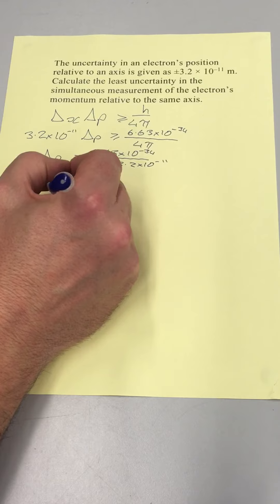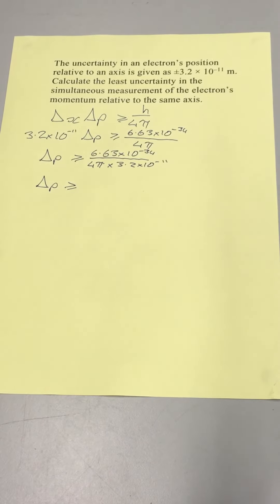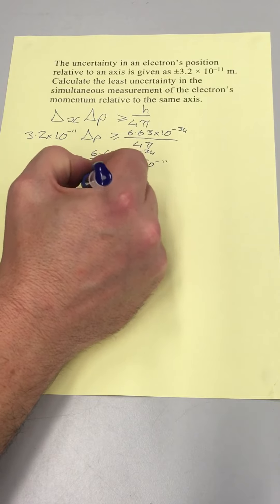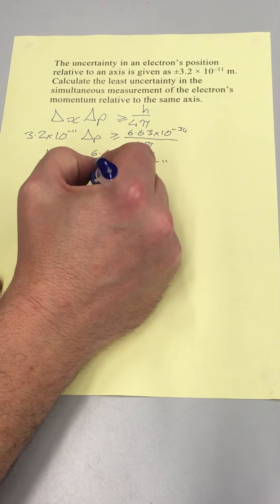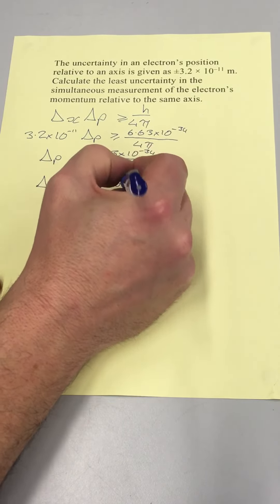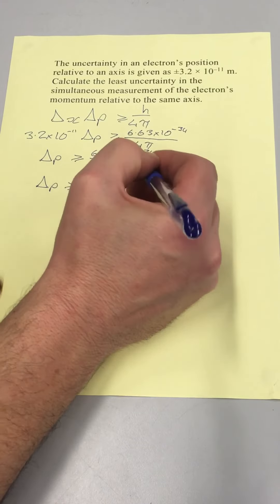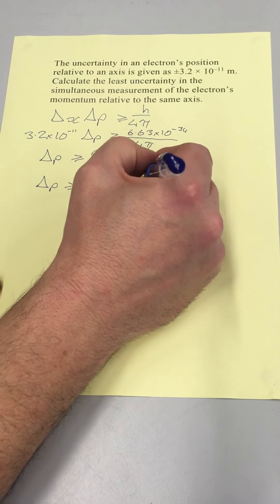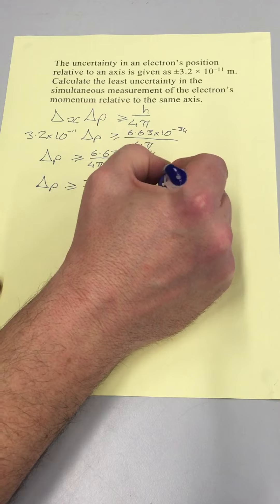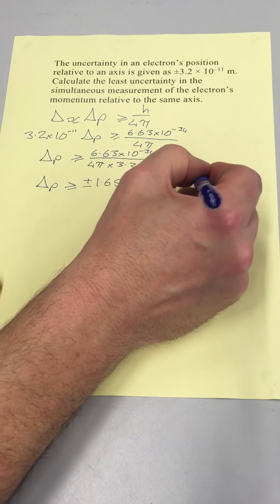Meaning that the uncertainty in the electron's momentum is plus or minus 1.65 times 10 to the negative 24 with units kg ms to the minus 1.